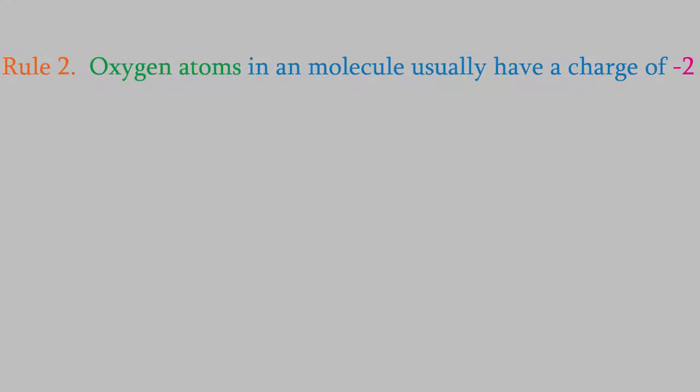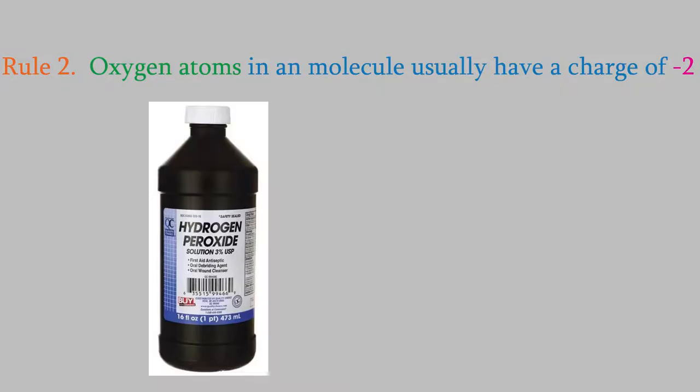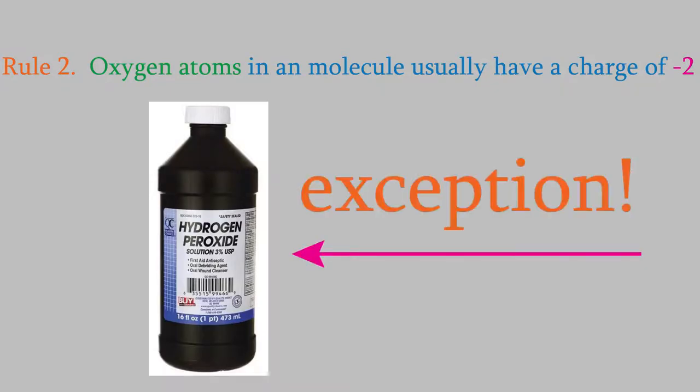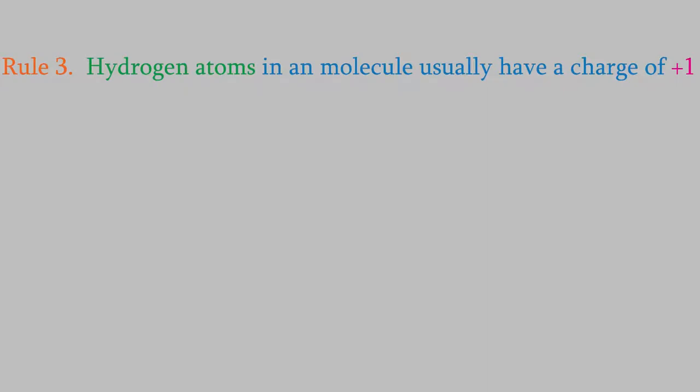The second rule is that oxygen atoms in a molecule will usually have a charge of minus 2. There are definitely exceptions to that rule. For example, the oxygens in hydrogen peroxide actually have a charge of minus 1 instead of minus 2, but we won't need to worry about those exceptions in this course. The third rule is that hydrogen atoms in a molecule will usually have a charge of plus 1. Again, there are a few exceptions, but you won't need to worry about them in this class.